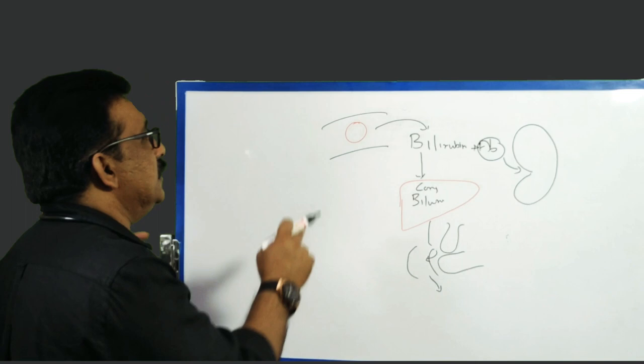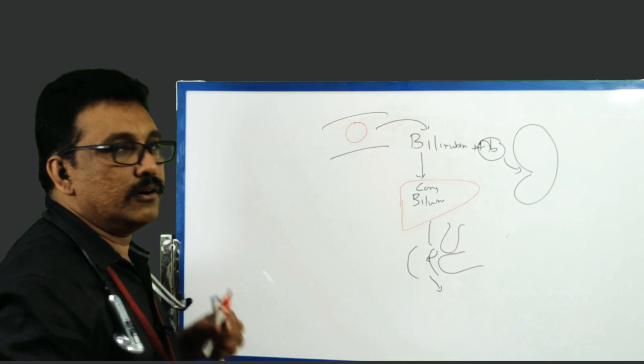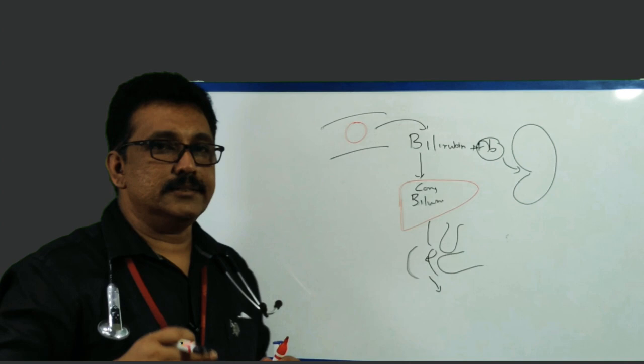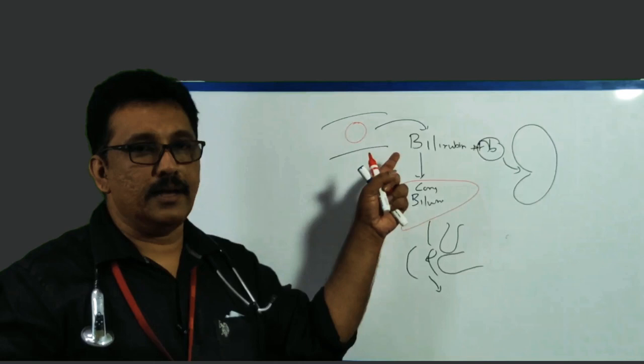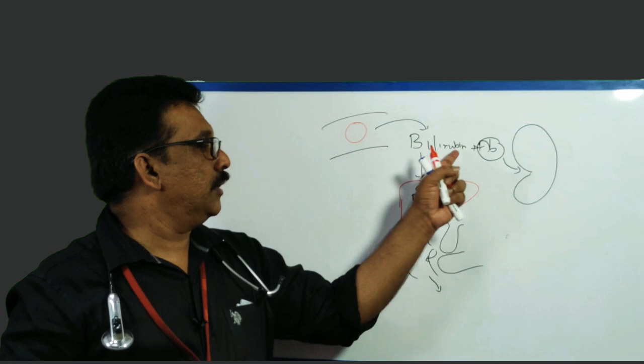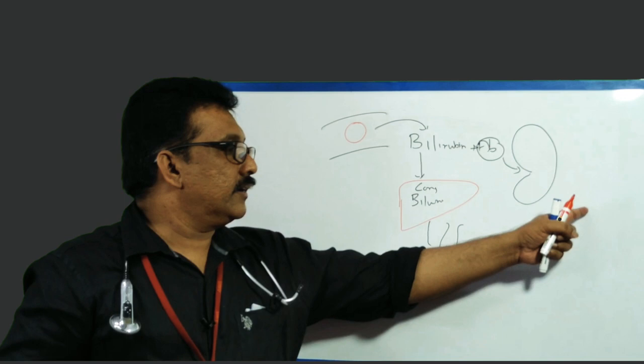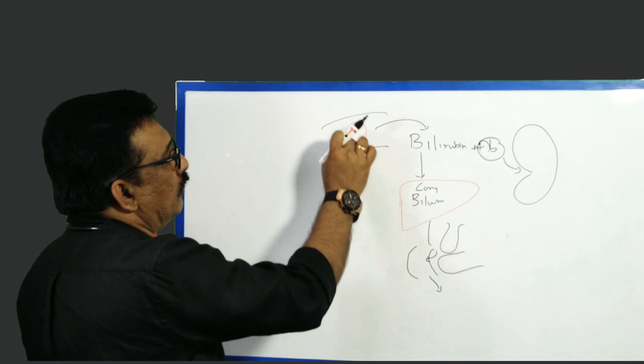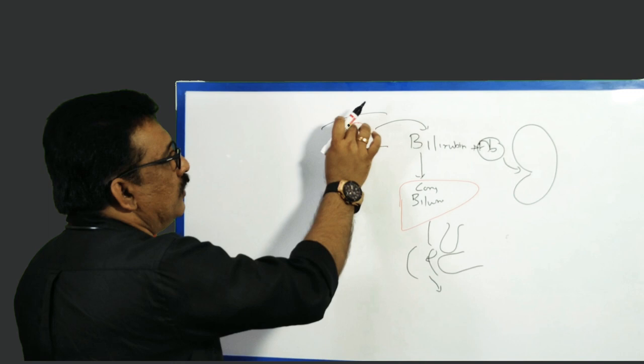If there is a problem in the blood vessel or in the RBCs — where RBCs are excessively broken down — this is called hemolysis. If there is a condition producing excessive breakdown of RBCs, that is hemolysis, and it can elevate indirect bilirubin. Since indirect bilirubin is bound with albumin, it will not go through the kidney, so you don't get yellow urine.